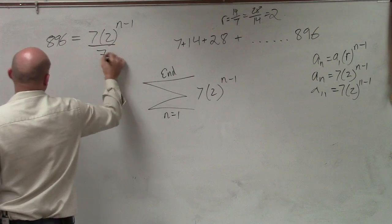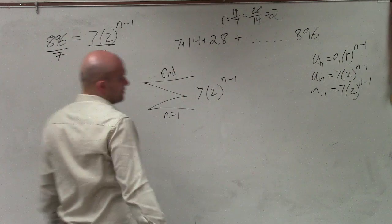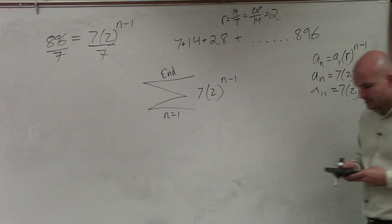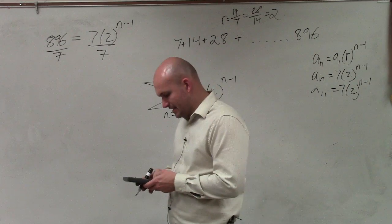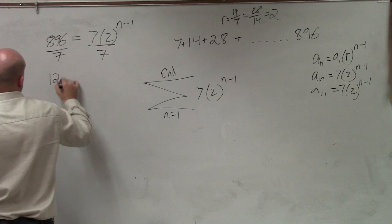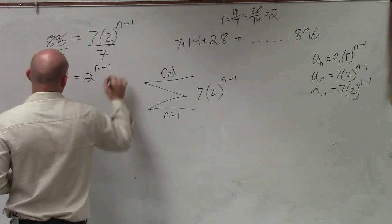So I have to set an equation of my rule saying, here's the last value. I just don't know what I plugged in for n. So I got to solve for n. So to do that, I divide by 7. So I have 896 divided by 7, which is 128, equals 2 to the n minus 1.